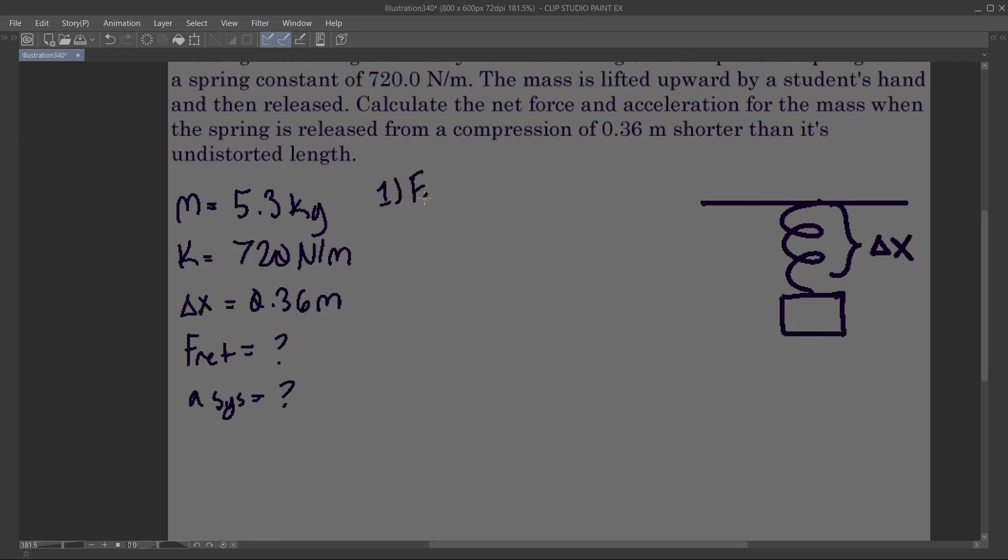What we're going to do first is calculate the force due to gravity acting on this object. Force due to gravity is equal to mass times the acceleration due to gravity. In this case, acceleration due to gravity is going to be negative because we're going to make down negative.